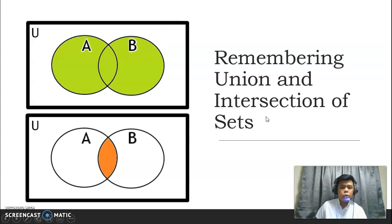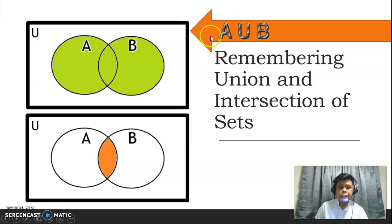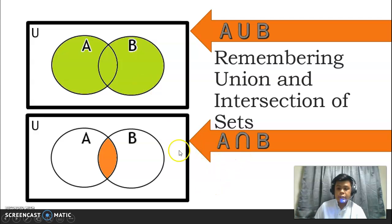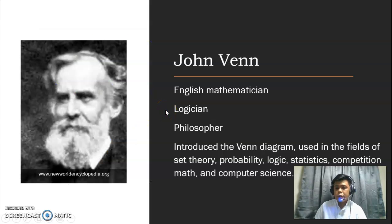Let us remember first yung Venn diagram ng union and intersection of sets. Itong first natin sa image, this is A union B or set A union set B. Papansin natin na ang nakashade ay yung parehas na A at saka yung B. Next, we have the intersection of A and B. We noticed that the shaded part is etong overlap na area na to. So, sino ba si John Venn? Manalas ko itong nababanggit sa iya, yung Venn diagram.